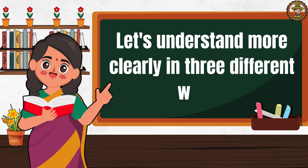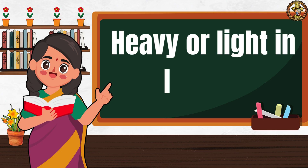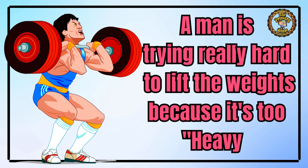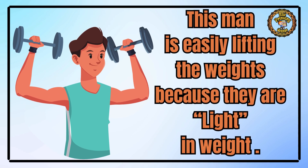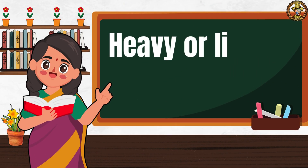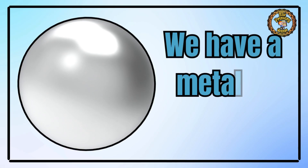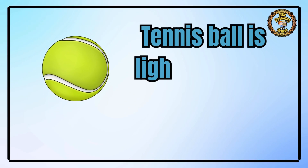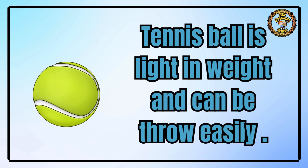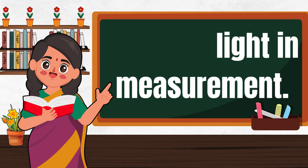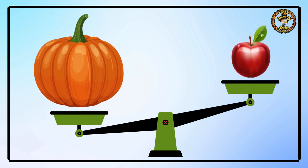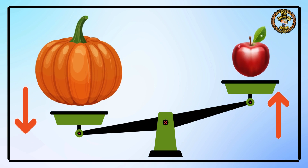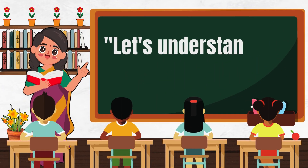Let's understand more clearly in three different ways. First is heavy or light in lifting. A man is trying really hard to lift the weights because it's too heavy, but this man is easily lifting the weights because they are light. Second is heavy or light in throwing. We have a metallic ball which is heavy and cannot be thrown easily, but this tennis ball is light and can be thrown easily. Third is heavy or light in measurement. When we put an apple and a big pumpkin on a weighing machine, the pumpkin goes down because it is heavy and the apple goes up because it is light.